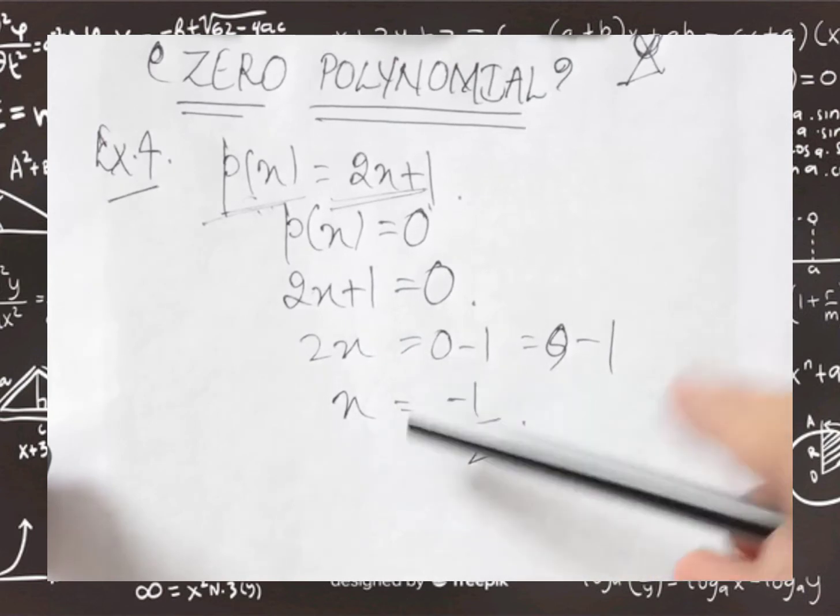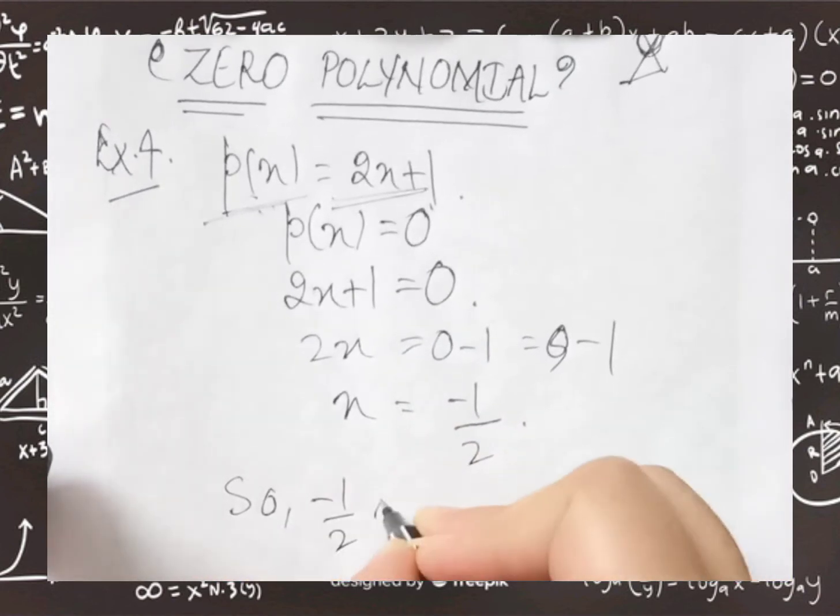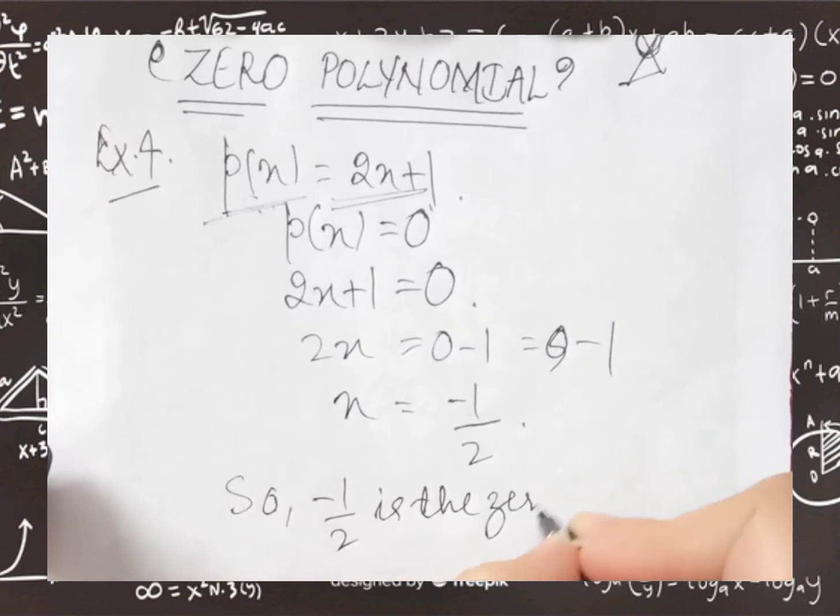So, our zero of the polynomial is coming up. Means, we have zero polynomial find. So, our answer is what? So, minus 1 upon 2 is the zero of polynomial x.